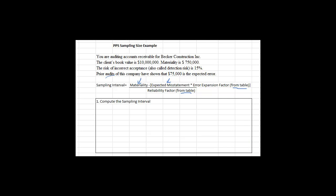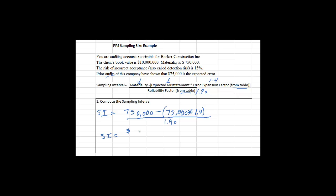The error expansion factor is 1.4 and the reliability factor is 1.90. That means the sampling interval is $750,000 — which is materiality — minus what we expect the error to be, expanded by this conservatism factor, all divided by the reliability factor. This gives us a sampling interval of $339,473.70.